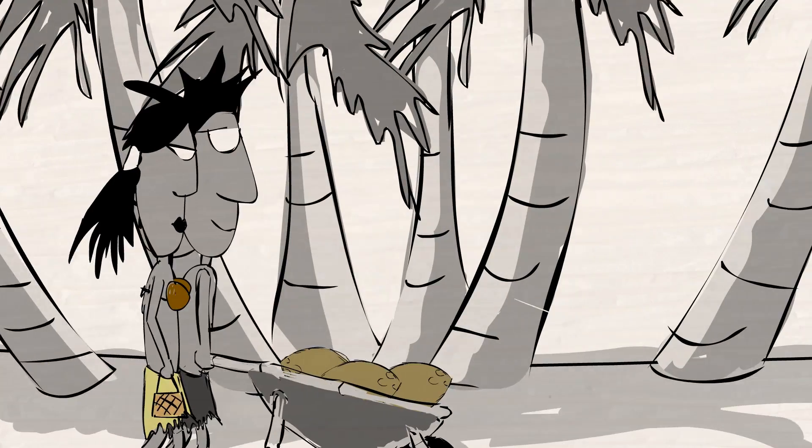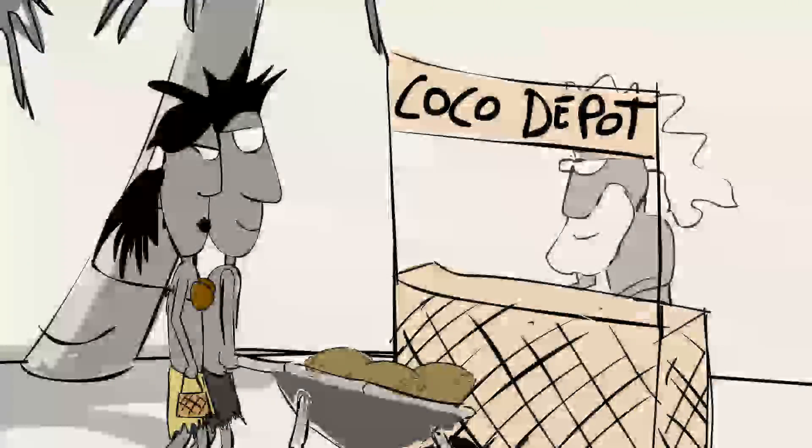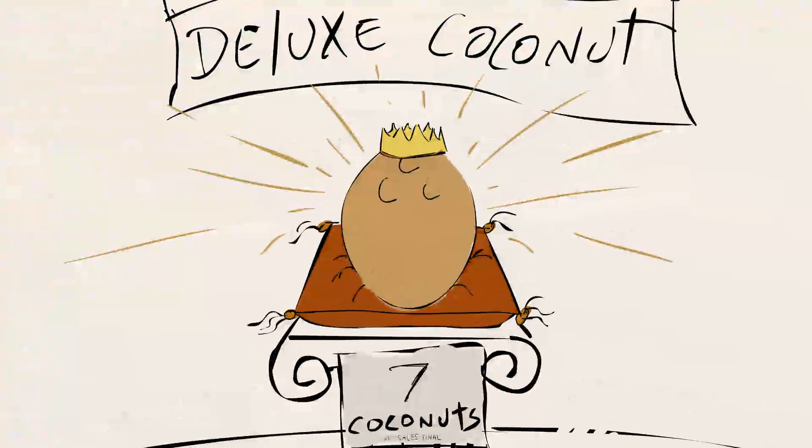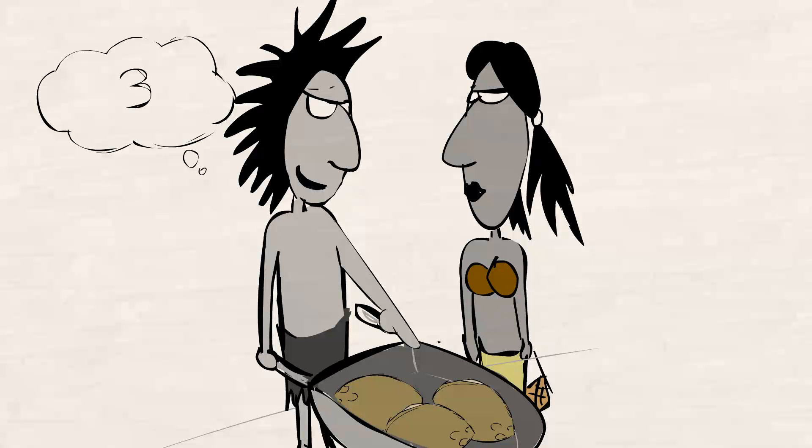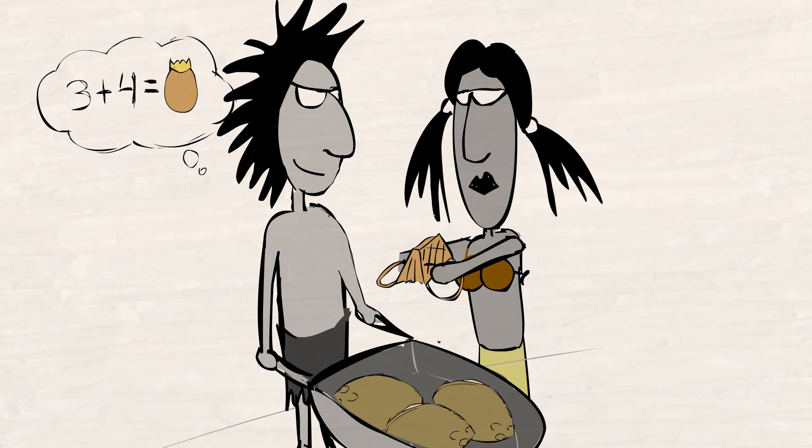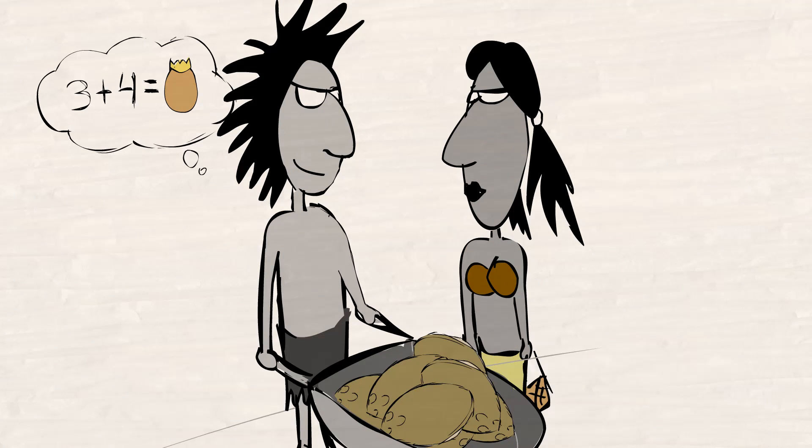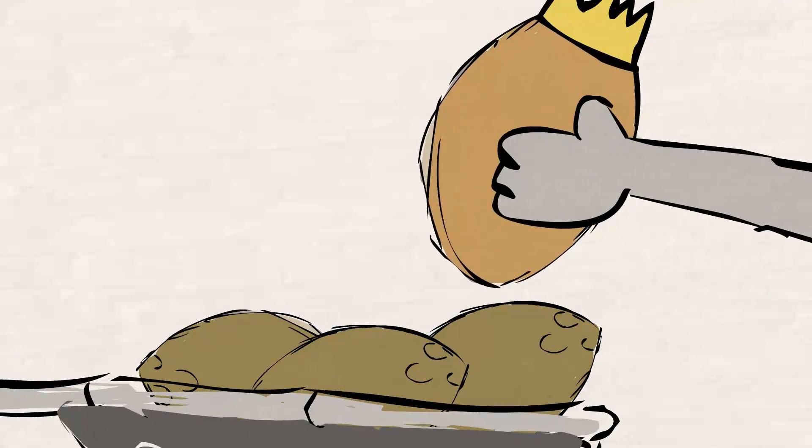Once we had invented addition and subtraction, the Coco Loconians could calculate very complicated coconut transactions with great precision. But we soon found out that with only addition and subtraction, some calculations could take a very long time.